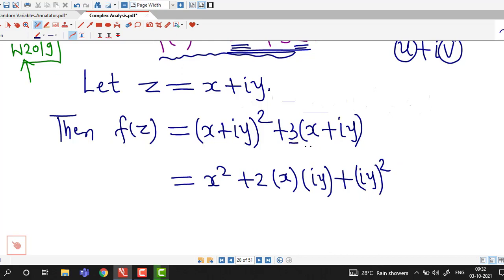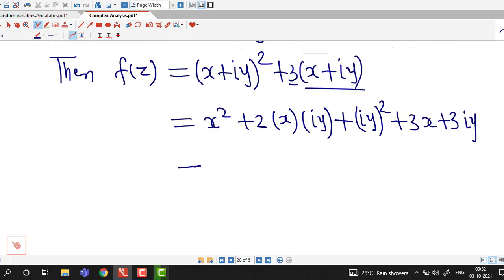We multiply 3 with this bracket, so we have 3x plus 3i y. Now this is equal to x square plus i into 2xy. This is i square into y square plus 3x, and here we can write i into 3y.